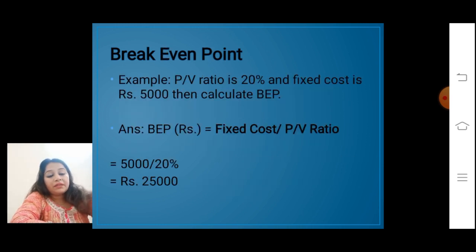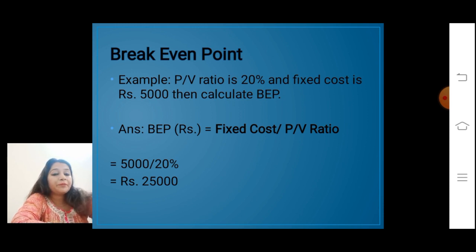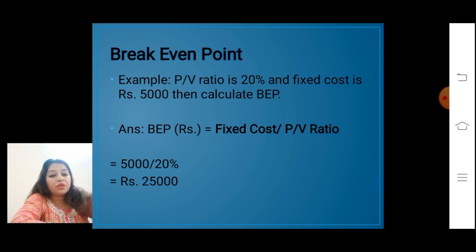We will understand break-even point with the help of an example. PV ratio is 20% and fixed cost is 5,000. We need to calculate break-even point. Break-even point equals fixed cost upon PV ratio: 5,000 upon 20%, so the break-even point is rupees 25,000.